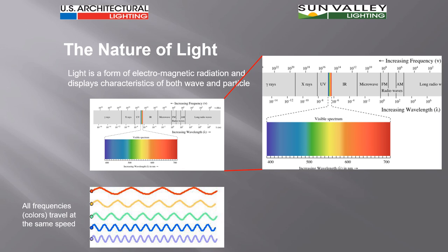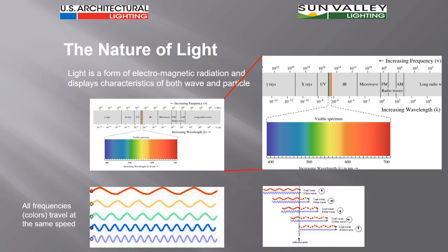Interestingly enough, in the electromagnetic spectrum, all frequencies travel at the same speed. Now that's really important in color because can you imagine, since white light is made up of all the different colors of the visible spectrum, if red and blue light traveled at different rates what things would look like?